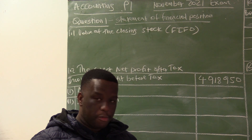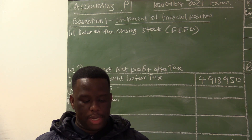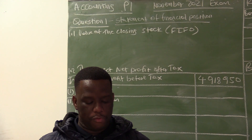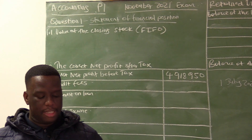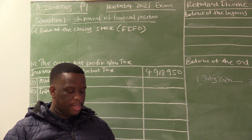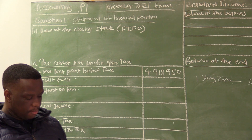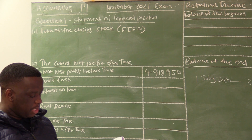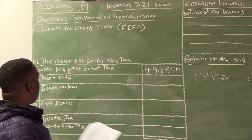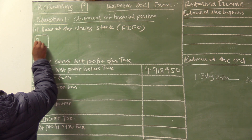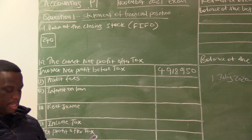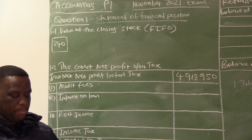Information B states that the accountant omitted the closing stock figure of formal suits from the trading stock balance in Information A. The First In First Out method is used to value the stock. The opening balance on 1 July 2020 was 110 units and the closing balance on 30 June 2021 was 240 units. We need to calculate the value of those 240 units using FIFO.